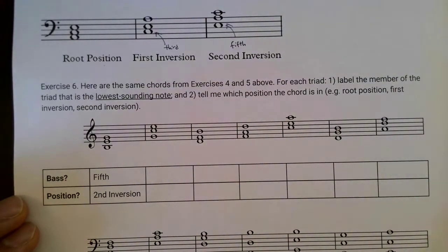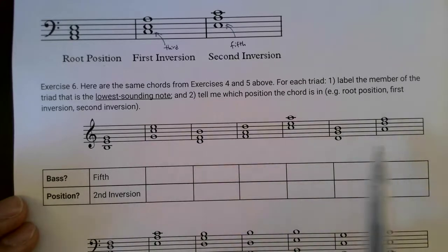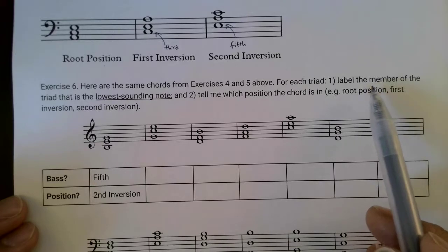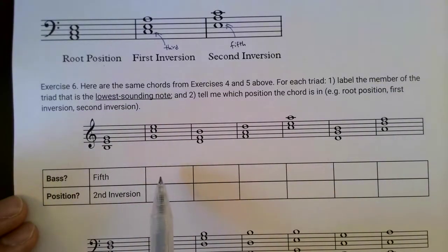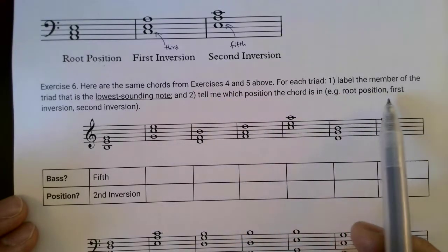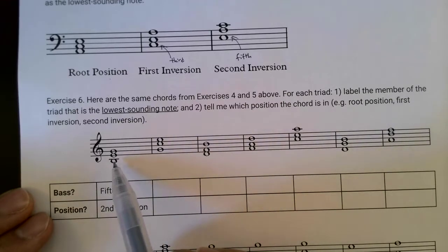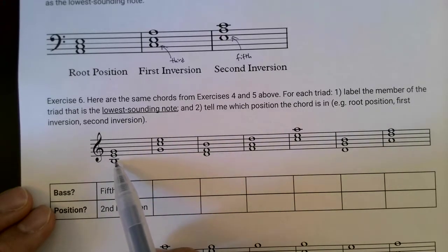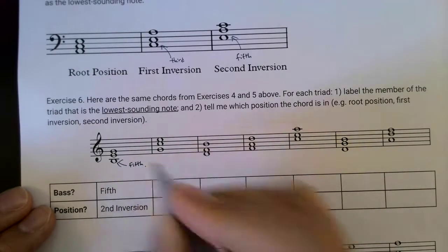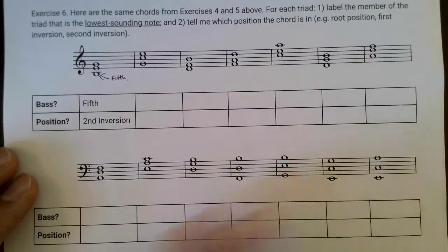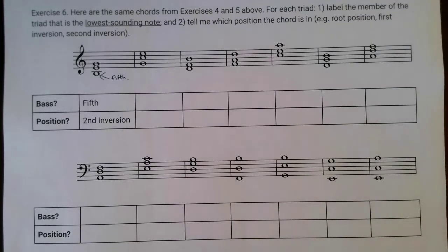For these exercises, these are the same chords from exercises four and five above. For each of these triads, tell me which note is the lowest sounding note and then tell me which position the chord is in — root position, first inversion, or second inversion — using the chart above. I gave you an example: in this chord, the B is the fifth of the chord and it's in the bass, so the lowest sounding note is the fifth, which means this is in second inversion. Continue doing the same thing with all of these. Make sure you check the answers I posted so you know whether you're on the right track. Good luck with this, and also reference the previous two videos, the handout posted on Blackboard, and the textbook.